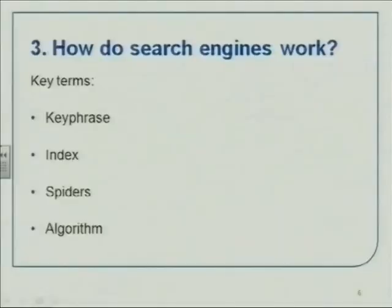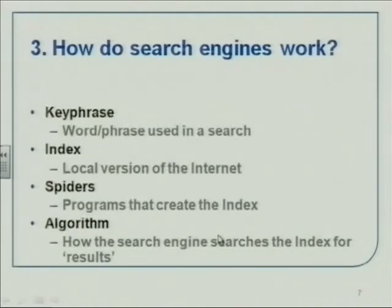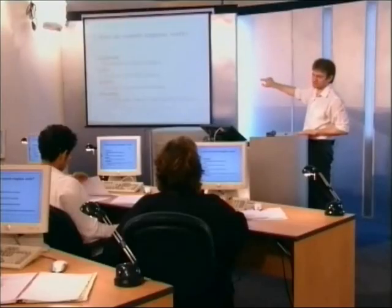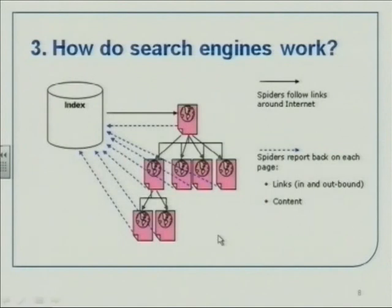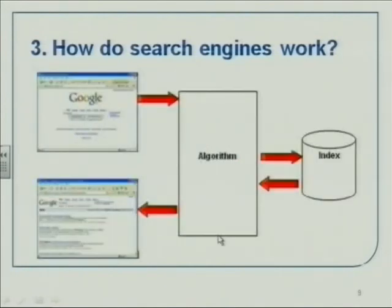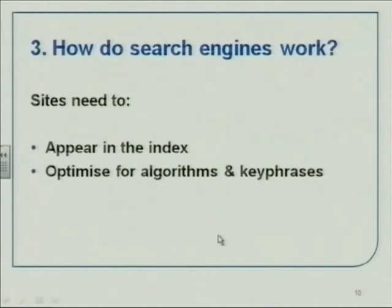So these are the phrases we've just talked about. The key phrase is what someone types in. The index is the database — the hard drive version of the internet. Spiders are the programs that go out and report back. The algorithm is the thing that actually does the searching and is the most interesting element of the search engine. The diagram shows: spiders look at websites, report back into the index, and when you run a search you give the phrase to the algorithm, which does the work and sends results back.